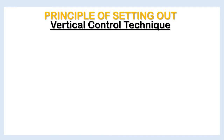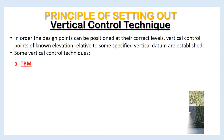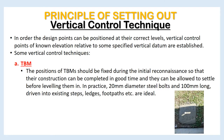The principle of setting out for vertical control technique: in order for design points to be positioned at their correct levels, vertical control points of known elevation relative to some specified vertical datum are established. One vertical control technique uses Temporary Bench Marks (TBMs). The positions of TBMs should be fixed during the initial reconnaissance so their construction can be completed in good time and they can be allowed to settle before leveling them in. In practice, 20 mm diameter steel bolts, 100 mm long, driven into existing steps, ledges, footpaths, etc., are ideal.